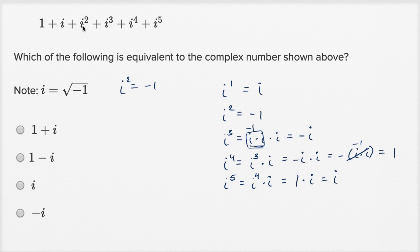So one plus i, i squared, this is negative one. i to the third is negative i. Negative i. i to the fourth is one. And then i to the fifth is i. This is i. All right.